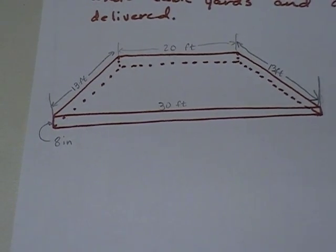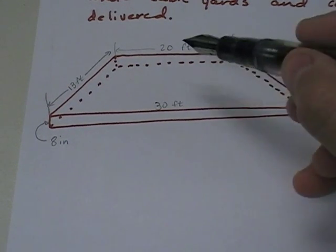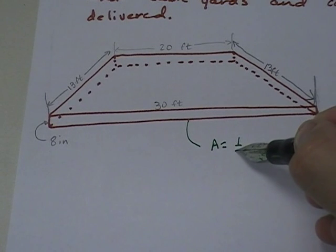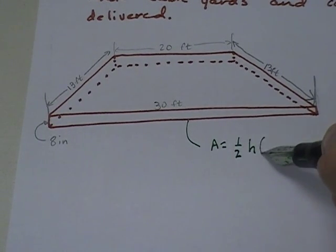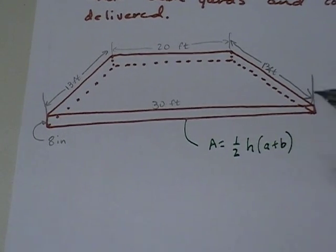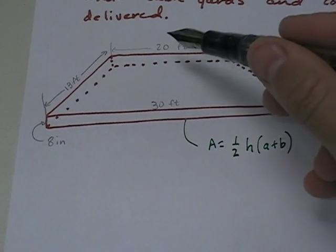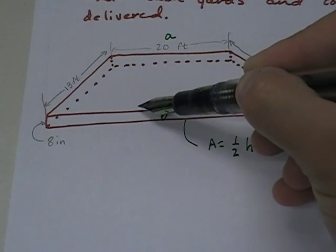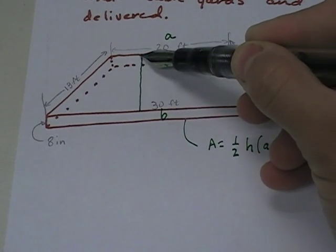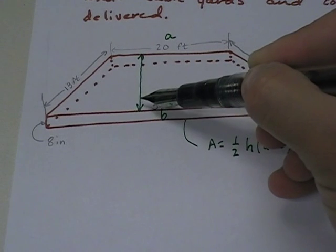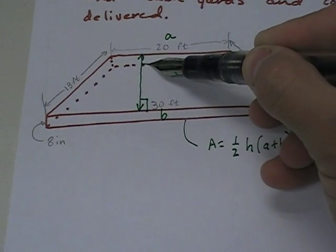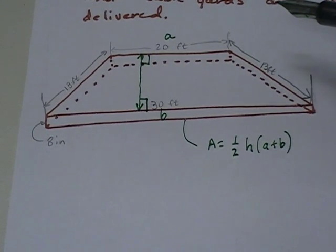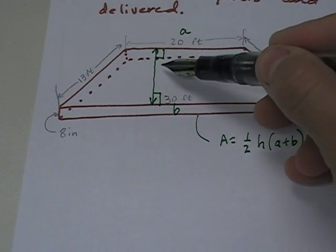Well, the problem is the area of a trapezoid is one-half h times a plus b. Well, this is a, and this is b, and h is between a and b, and it's perpendicular to a and perpendicular to b. They did not give me h, and there's my problem. So I have to find h.